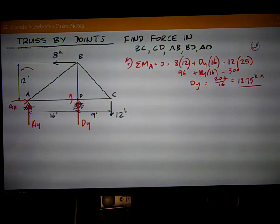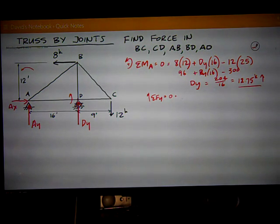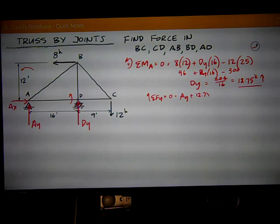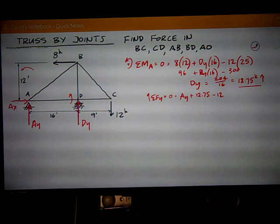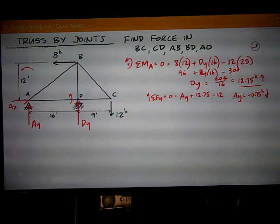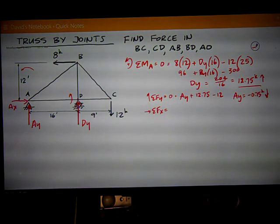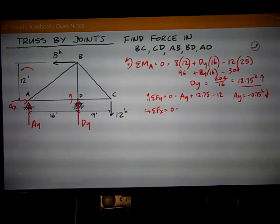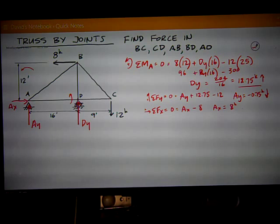Then, I can just do a quick sum of forces in the Y equals 0 equals AY, which I've assumed up, plus the 12.75 that I got from DY, minus the 12 kips out there at point C. That means that AY works out to be negative 0.75 kips, which means it's down, the opposite of what I assumed. Sum of forces in the X direction, similarly, is real easy. Gives me AX, assumed positive to the right, minus the 8 kips at B. That means that AX equals positive 8 kips, meaning the direction I assumed it.